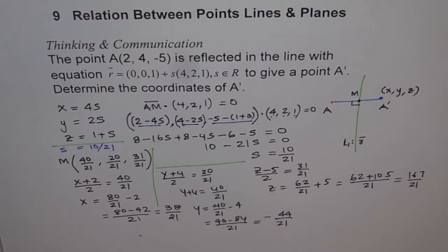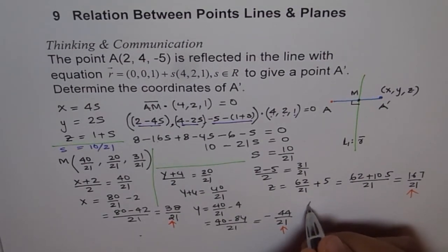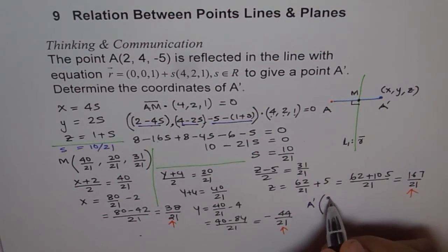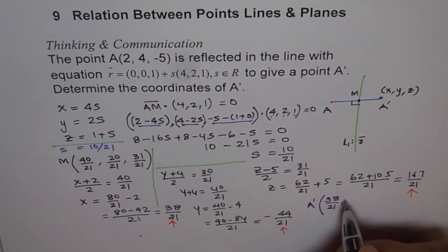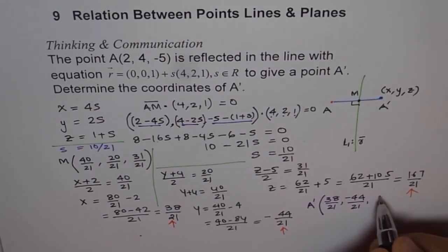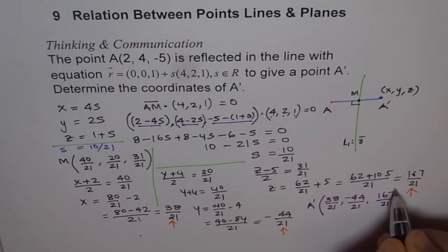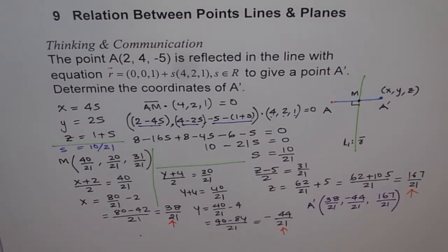Now we can write our answer right here. So the point A dash should be equal to (38/21, -44/21, 167/21). So that's the point A dash.